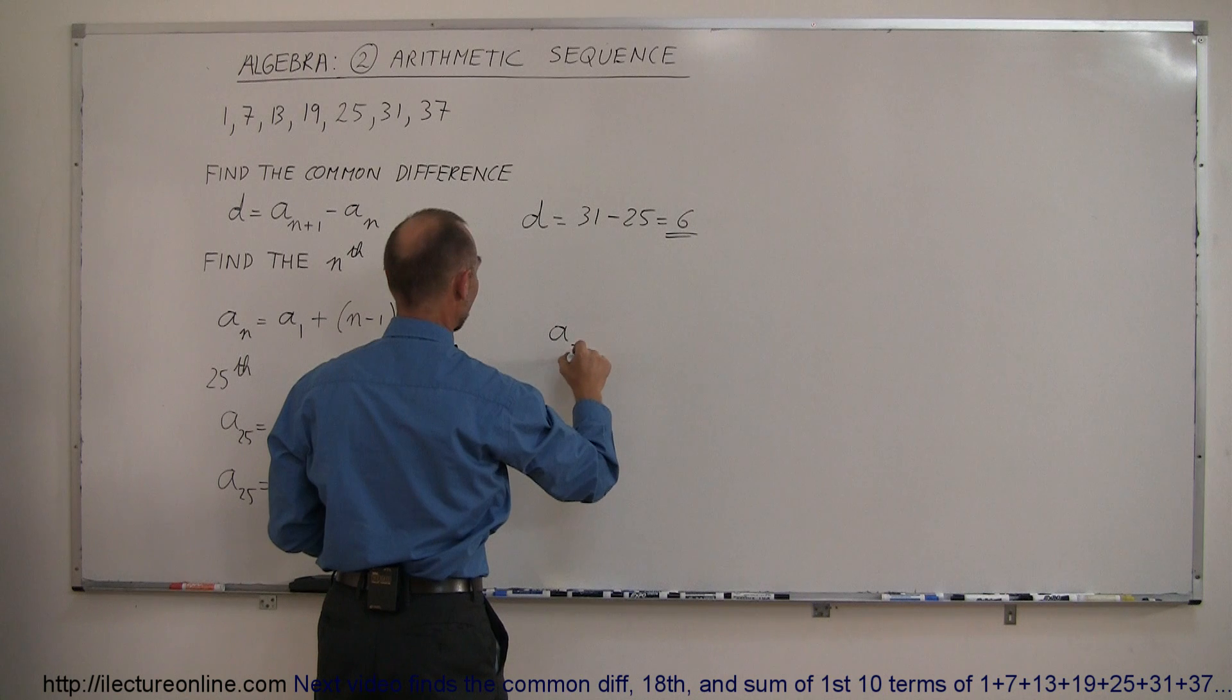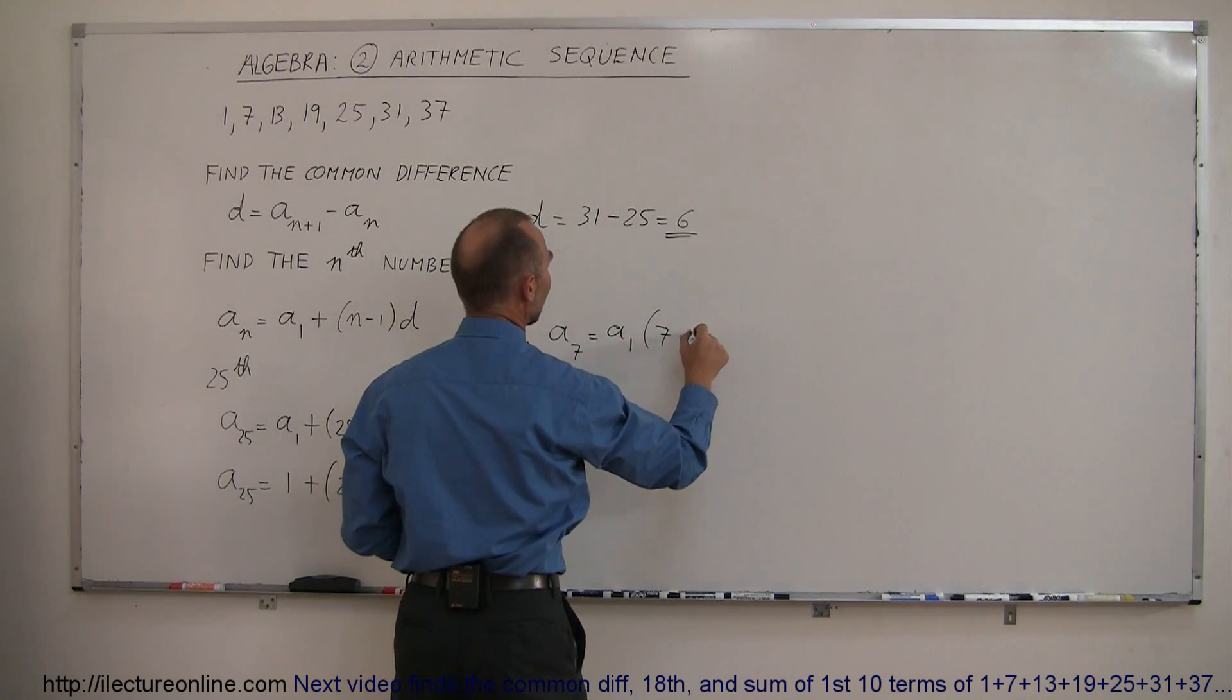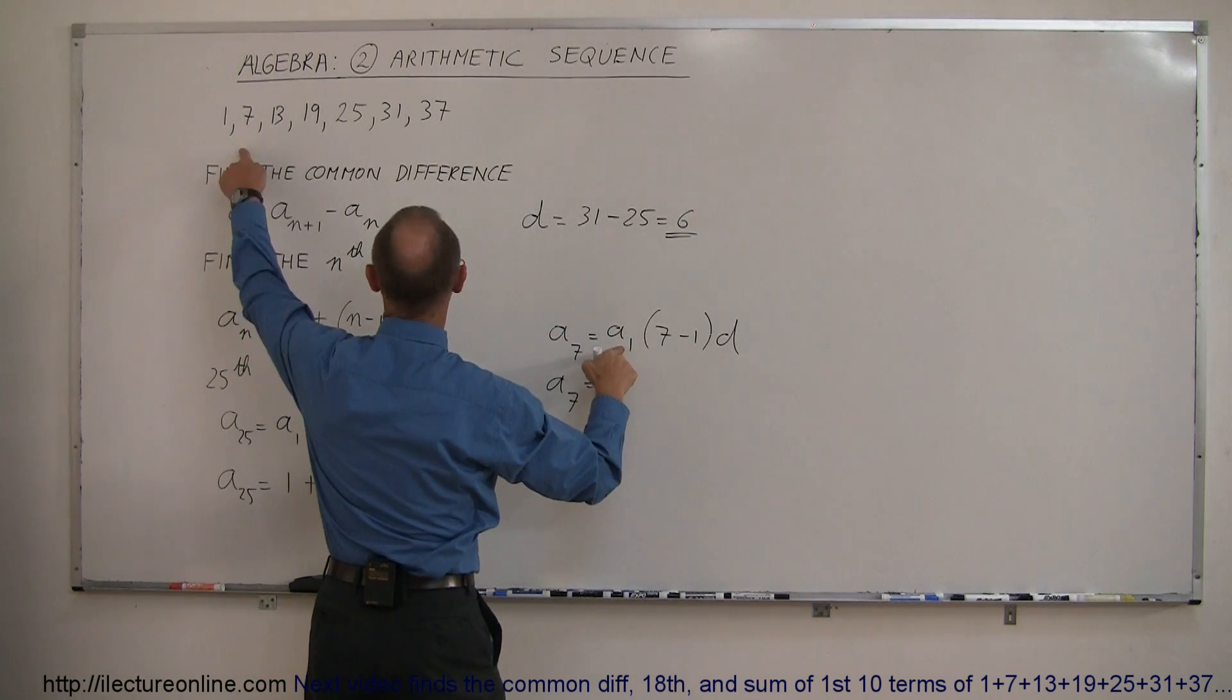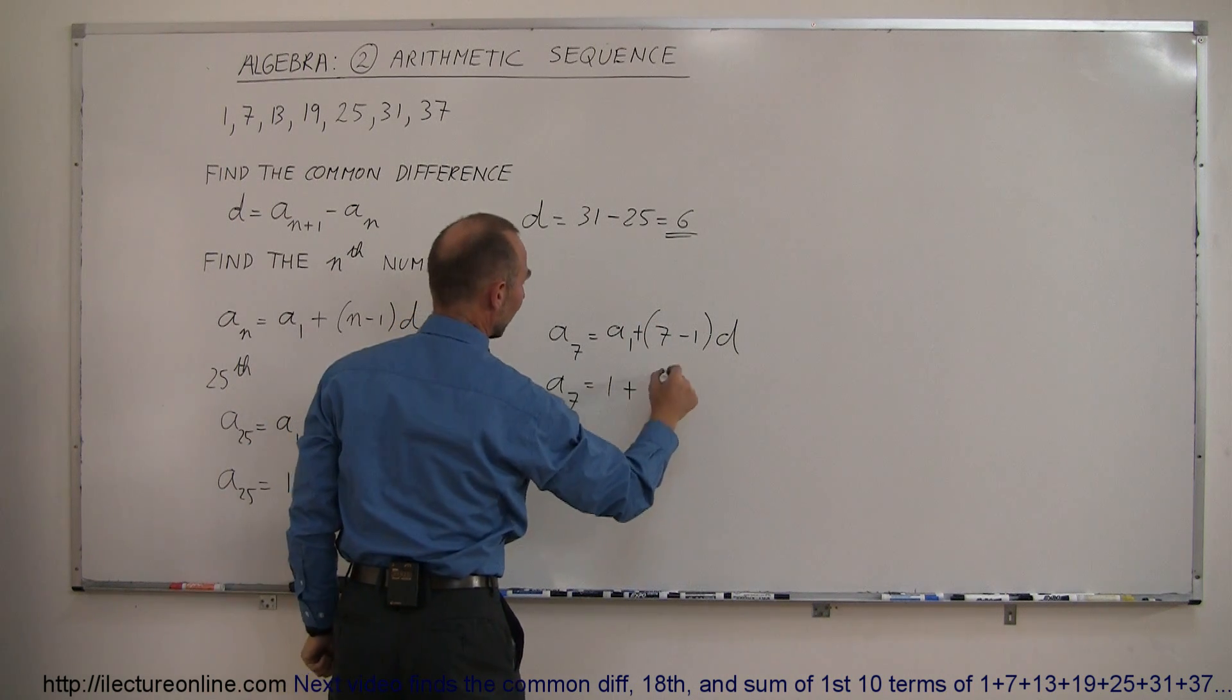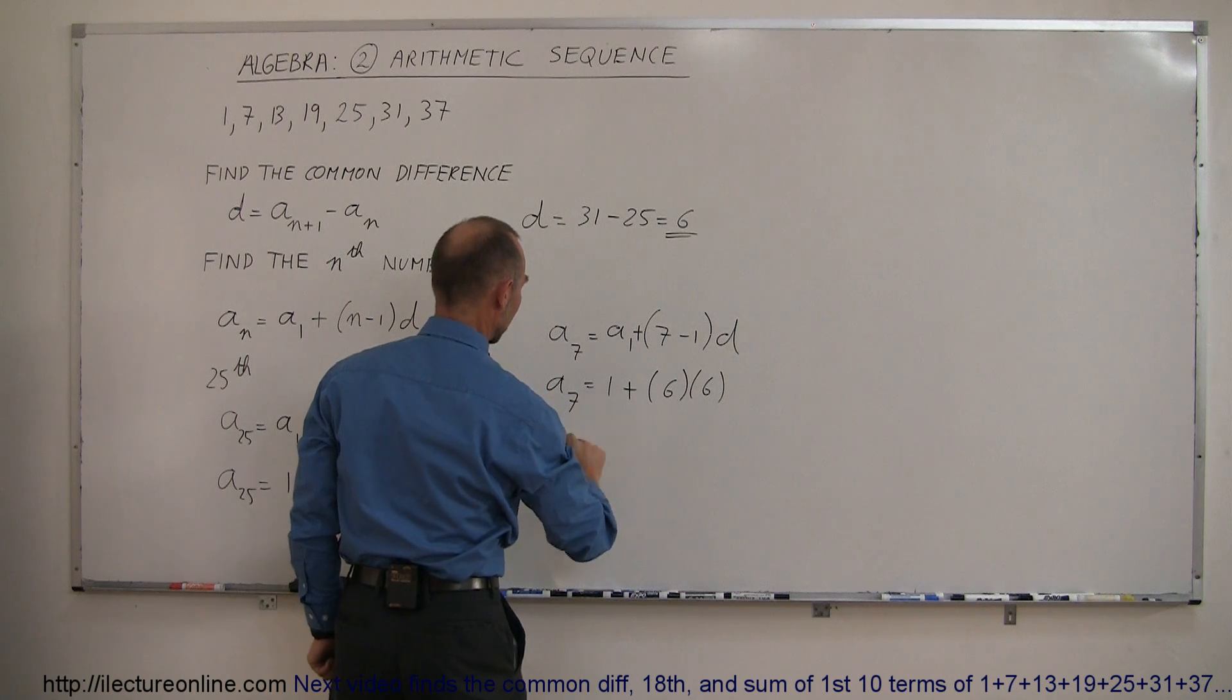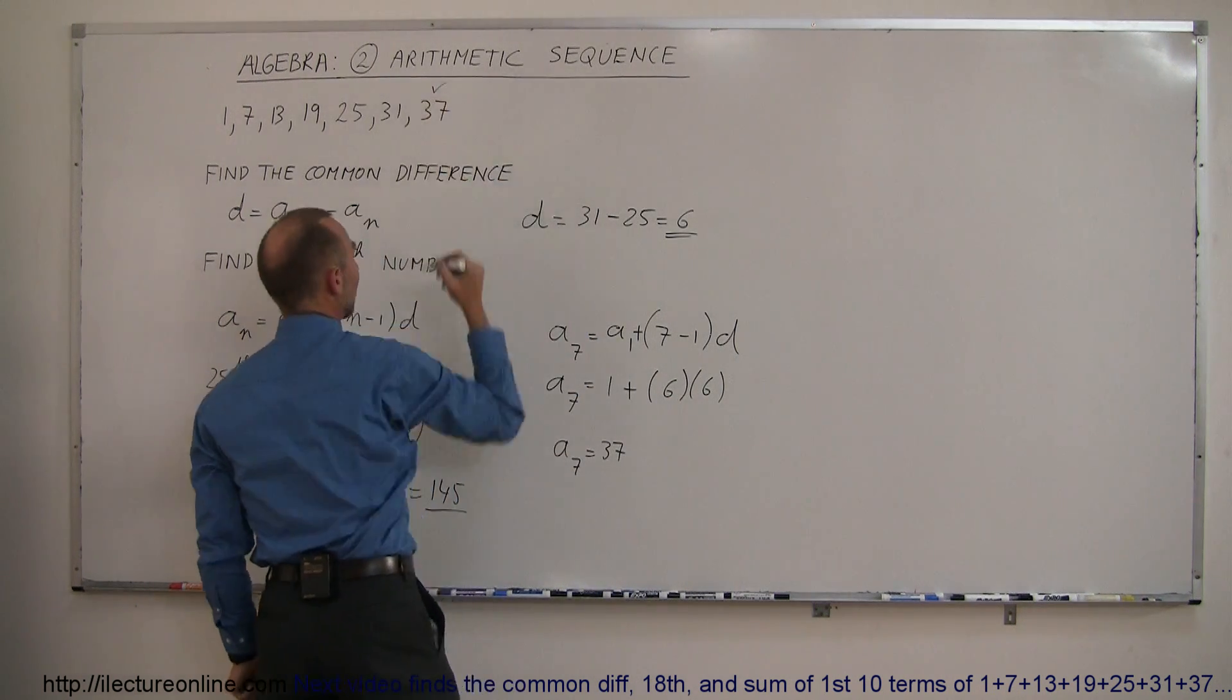So a sub 7 is equal to a sub 1 plus 7 minus 1 times the common difference. So a sub 7 is equal to the first one, which is 1, oh, I forgot the plus there. So this is 1 plus 6 times 6, 6 times 6 is 36, plus 1, a sub 7 equals 37. And sure enough, we found the right one.